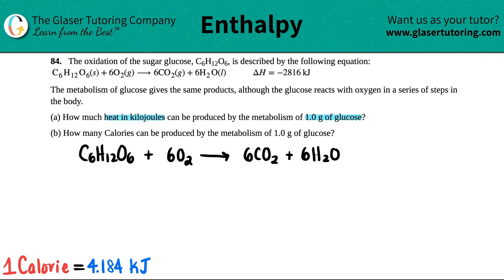I already see coefficients, so I'm not going to worry that this is not balanced. And they gave me a delta H value, negative 2,816, and that's kilojoules.